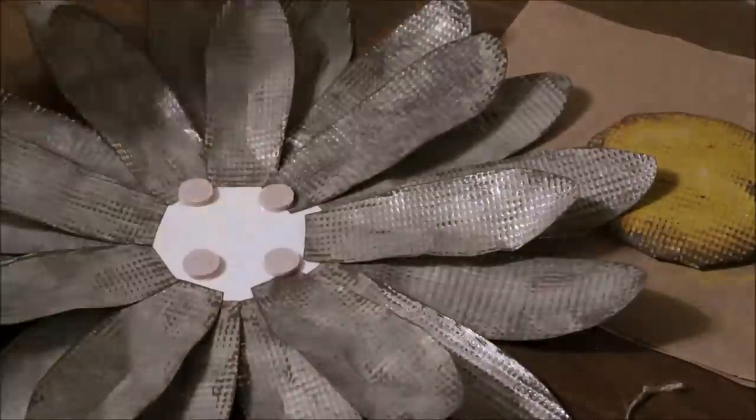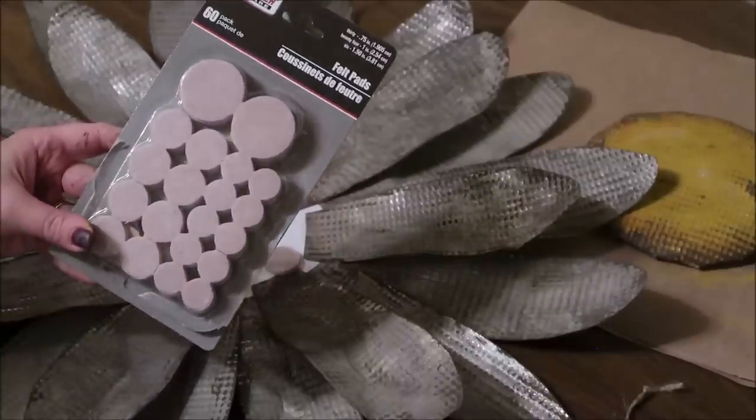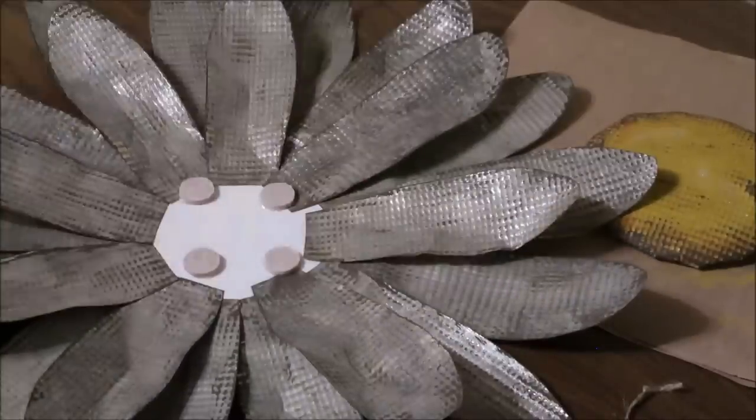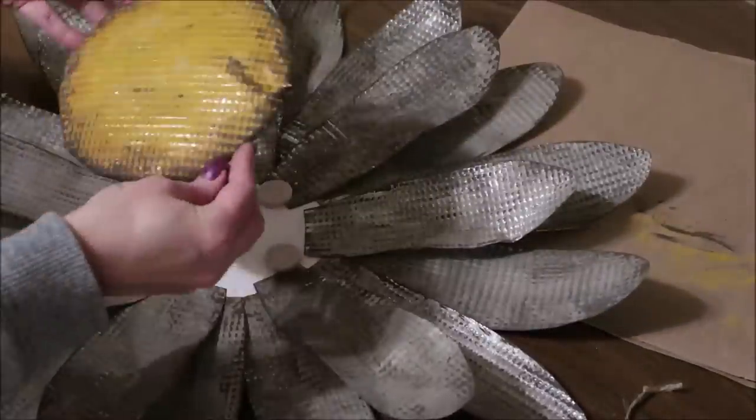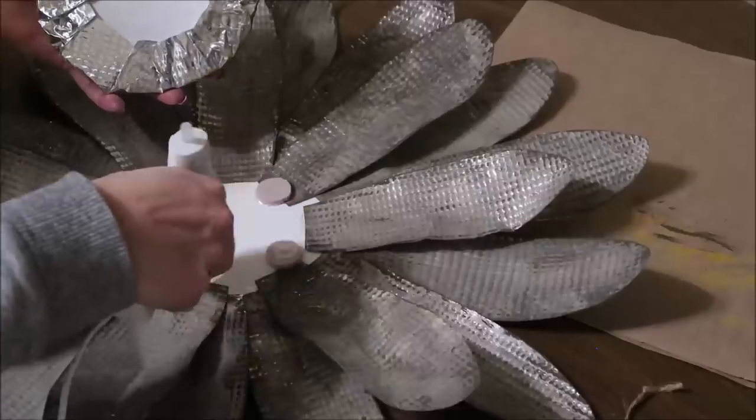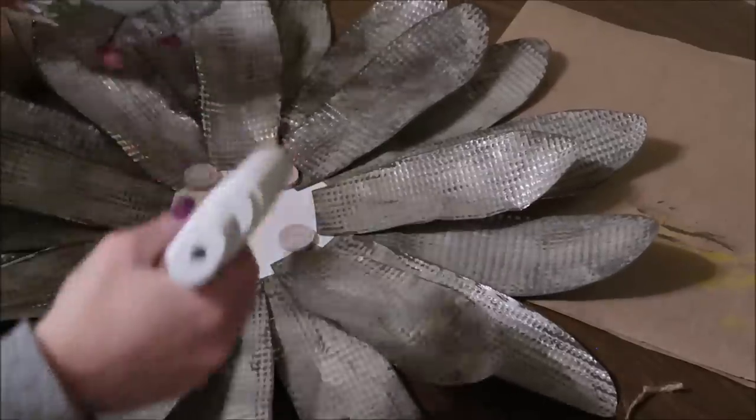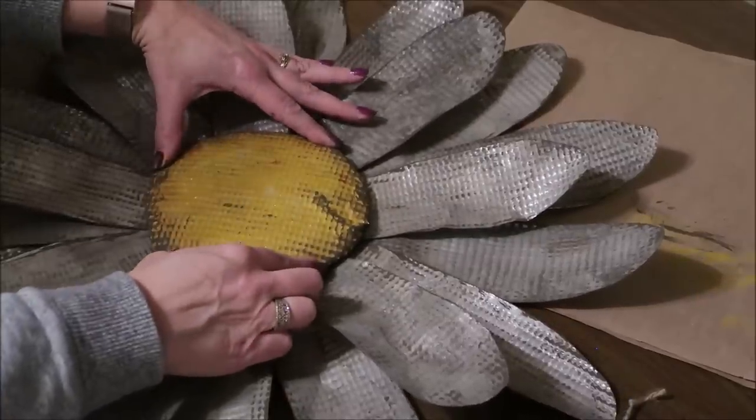This step is totally optional. I just decided I wanted the center to stick up a little bit more, so I added some of these felt pads from Dollar Tree in the center. That just held it up a little bit more and gave it a little bit more height. Then I just added some hot glue to the top of those felt pads and glued the center of the flower directly on top.